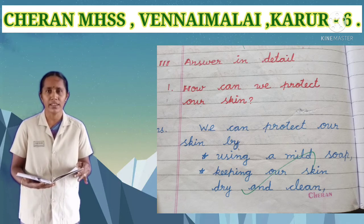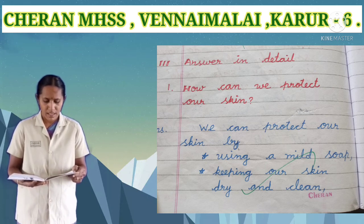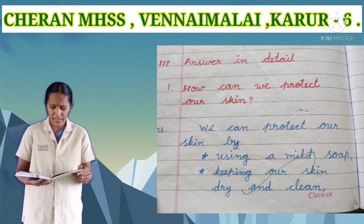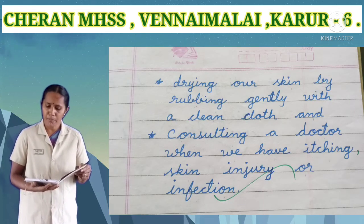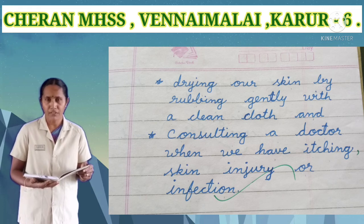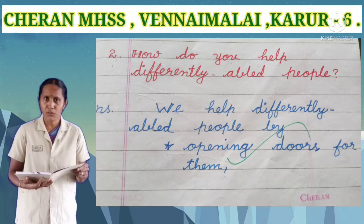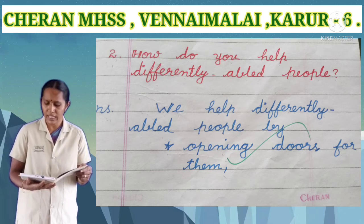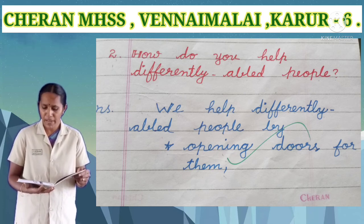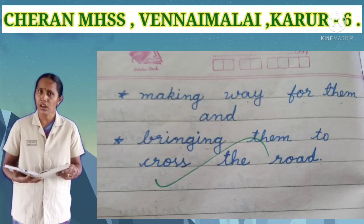Ninth Roman numeral answer: how do you help differently abled people? Answer: we help differently abled people by opening doors for them, making way for them, and helping them cross the road.